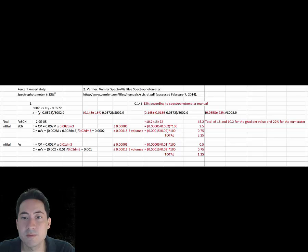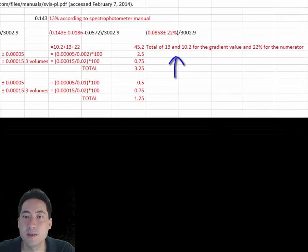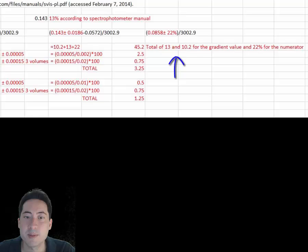The uncertainty for the gradient is y divided by x, so is determined by adding the percentage uncertainties, which is 13% for y and 10.2% for x. This adds up to 23.2%.